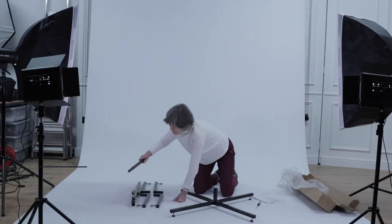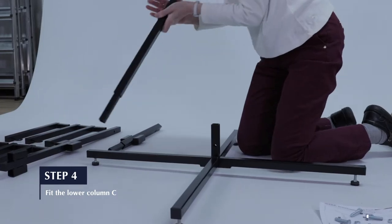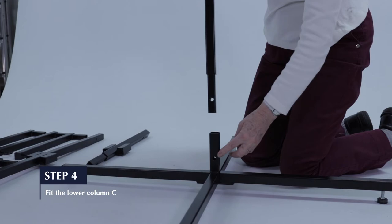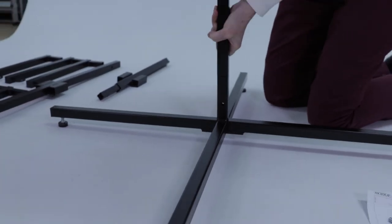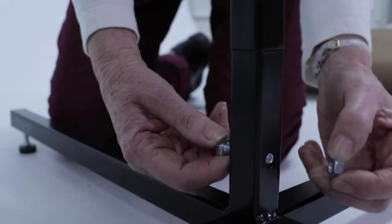Step 4. Fit lower column C into the base section B. Ensure that the holes line up between both sections so bolt F can be slid through the hole and the nut fitted.